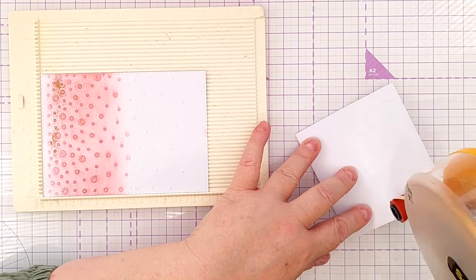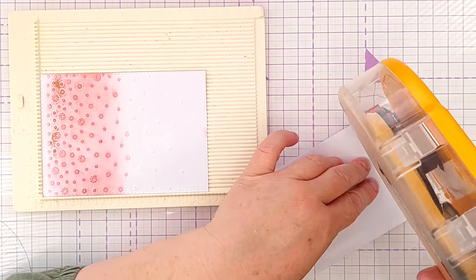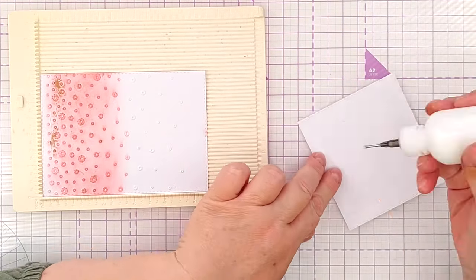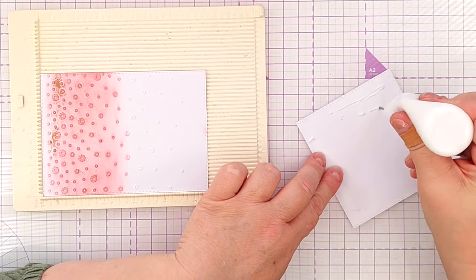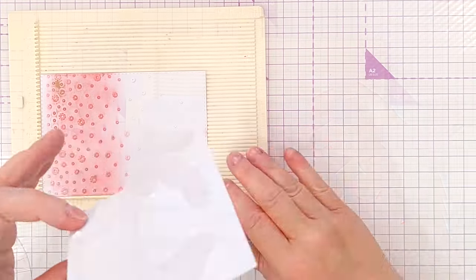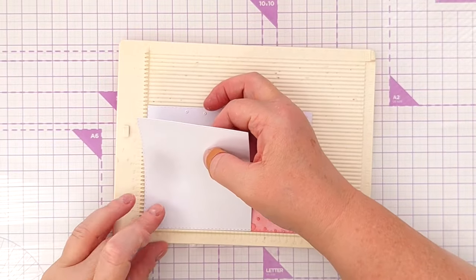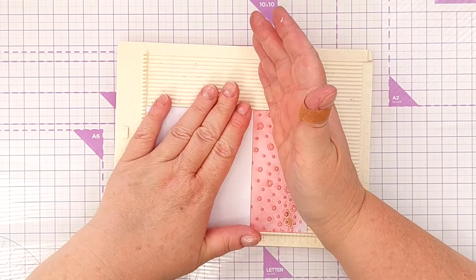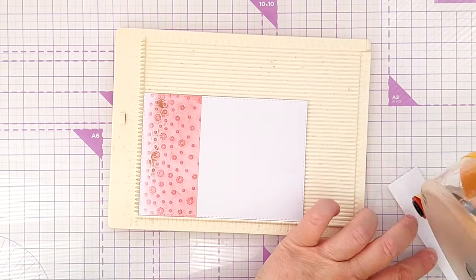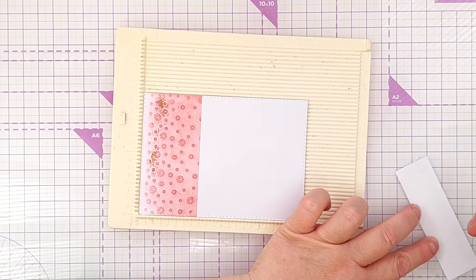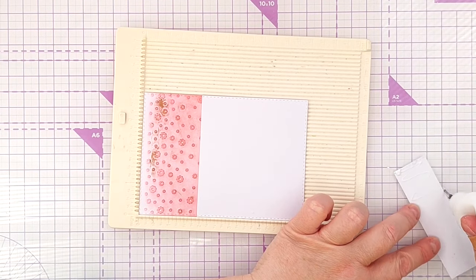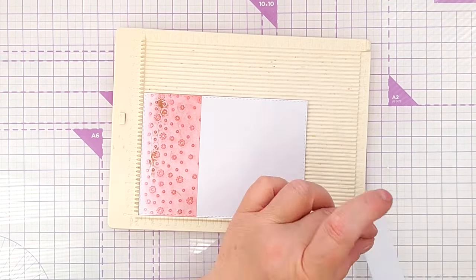And now it's time to assemble my card and I'm using my scoreboard to help me do this. You don't need a scoreboard, just anything with a right angle really. A stamping platform would work well. To adhere the front panel down to the embossed panel I'm using a combination of tape and glue because I want it to stick really well. All I'm doing is pushing the embossed panel right into the corner of the scoreboard, putting the adhesive on the front panel and then pushing that right into the corner and pressing down so that everything is lined up perfectly.